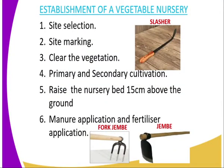Then we have the establishment of a vegetable nursery. We have procedures that you are supposed to follow. The first step is site selection — the site should be on a gentle slope to facilitate drainage. The second step is site marking; after selecting the site, you should make sure it is well marked and demarcated to show all the boundaries. The third step is clearing of the vegetation, which can be done using a slasher, a panga, or a machete.